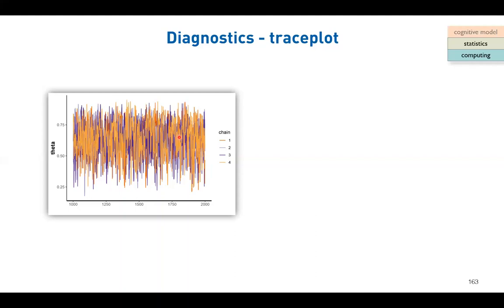If the R-hat is 1.5, for example, you might imagine one chain is entirely off, somewhere unrelated to the others - that is an indication of bad model estimation. I'll show an example later. This plot is called the trace plot because it represents the trace of MCMC samples.